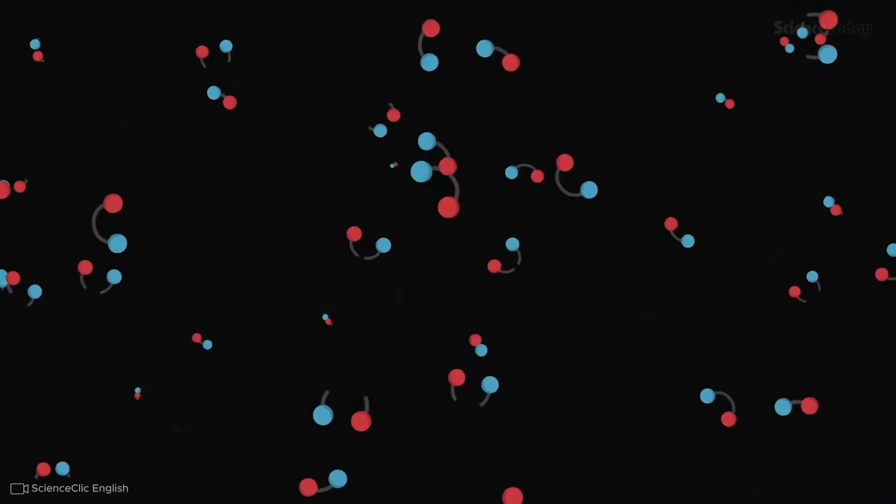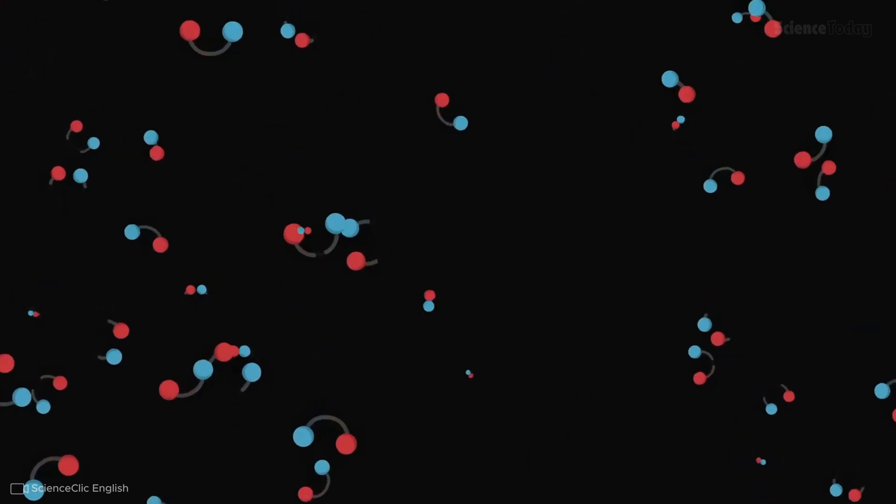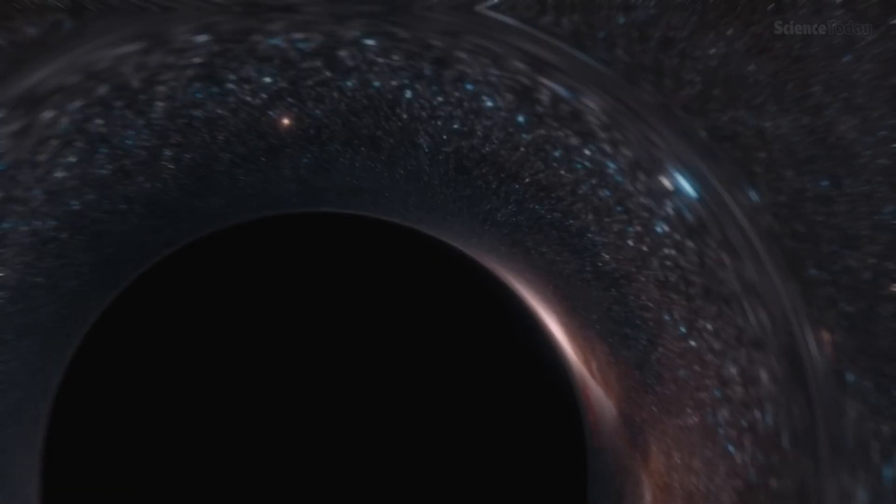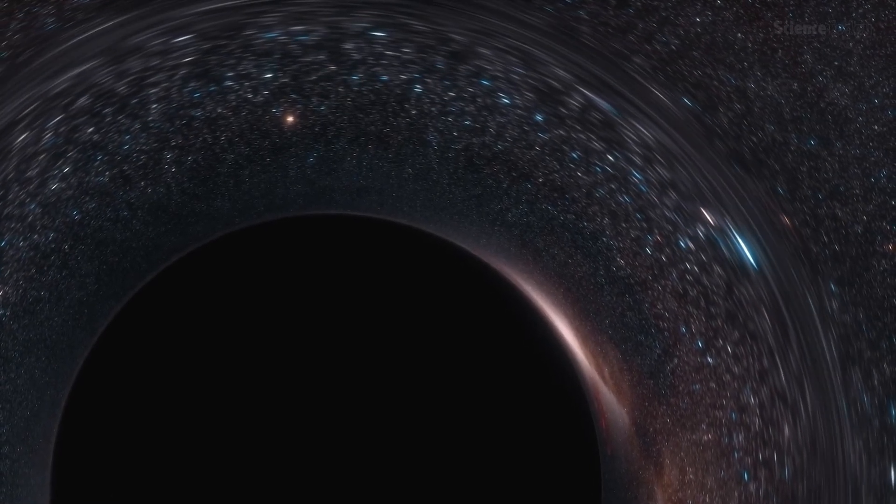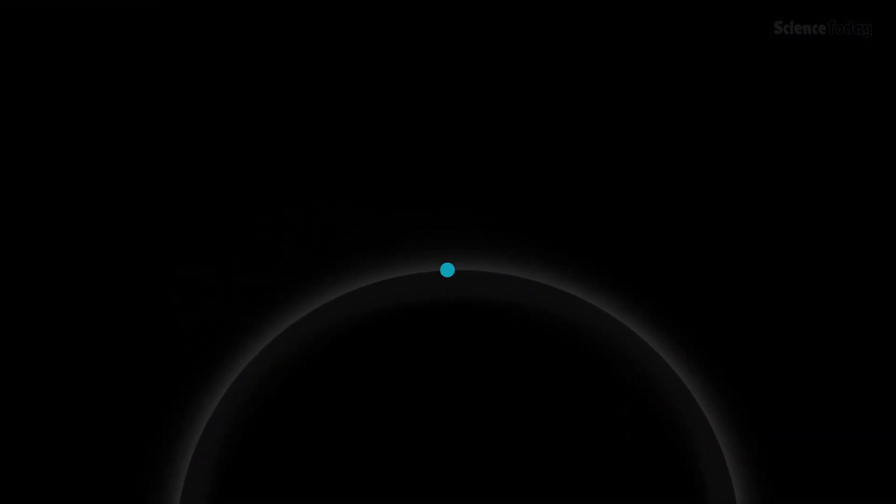Typically, these pairs annihilate each other in an instant, vanishing as quickly as they appeared. However, at the event horizon, something unusual can happen. If one particle of the pair falls into the black hole while the other escapes, the escaping particle takes energy with it.